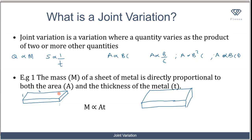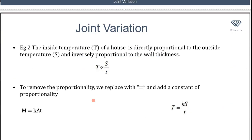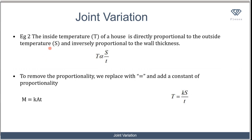So we can see that the mass is directly proportional to the area, because as the area increases the mass also increases. The mass is also proportional to the thickness t — t represents thickness. As the thickness increases, the mass increases. Combining these two variations, the mass is proportional to both the area and the thickness.